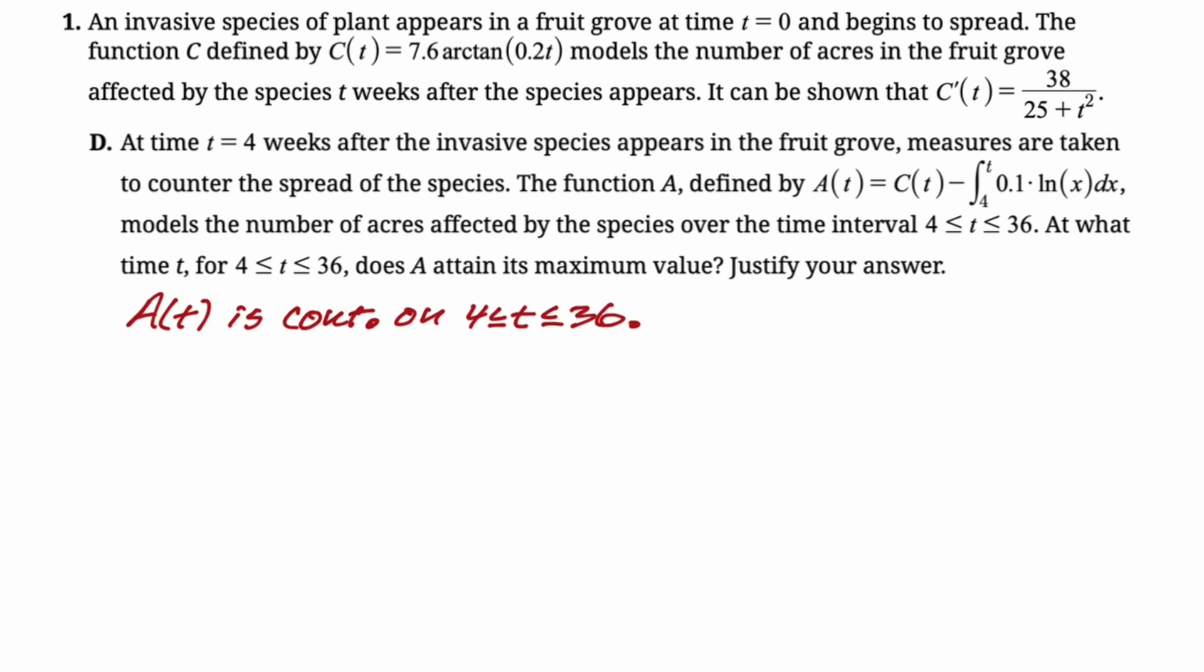Candidates test—I'm going to start off by saying that the function is continuous, because we need that if we're going to use the candidates test. So we're continuous on 4 to 36. Therefore, by the candidates test, the absolute max is going to be at either an endpoint or a critical point. So I need to find the critical points when A prime equals zero.